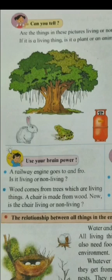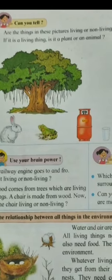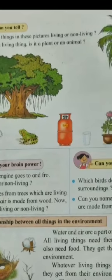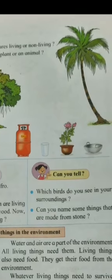The next picture is of a frog. It is again a living thing and it comes in the group of animals. The next picture shows a gas cylinder — this gas cylinder is a non-living thing. Then you have a picture of a glass, which is also a non-living thing. Then next, you have a picture of a pot — the pot is a non-living thing, but the rose plant is a living thing and it comes in the group of plants.